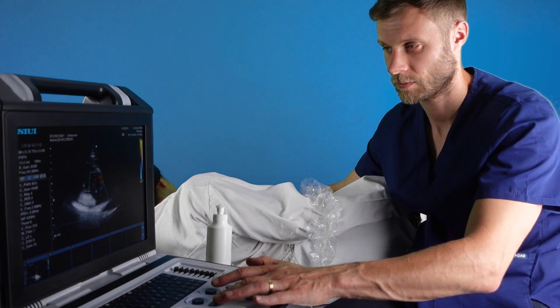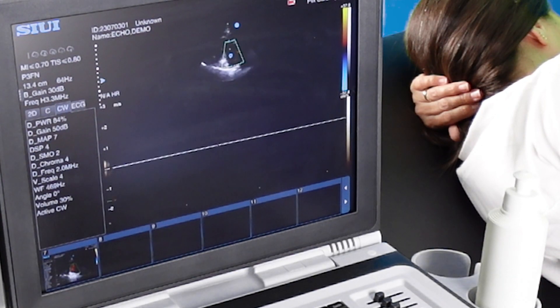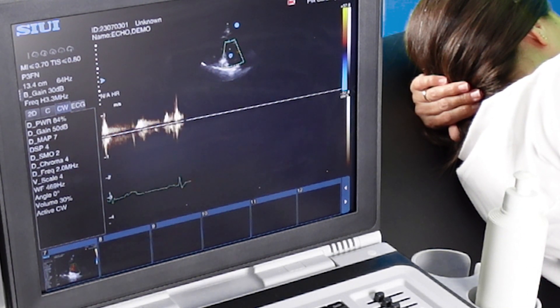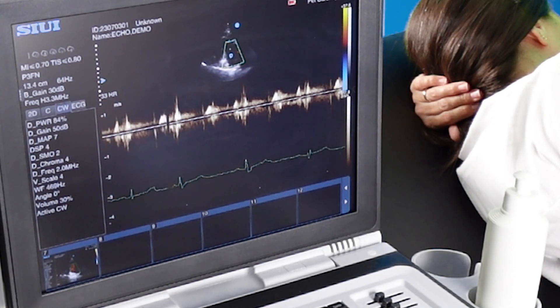You can use your continuous wave Doppler here to get a trace of any regurgitation that you find. Most patients will have a small amount of tricuspid regurgitation.